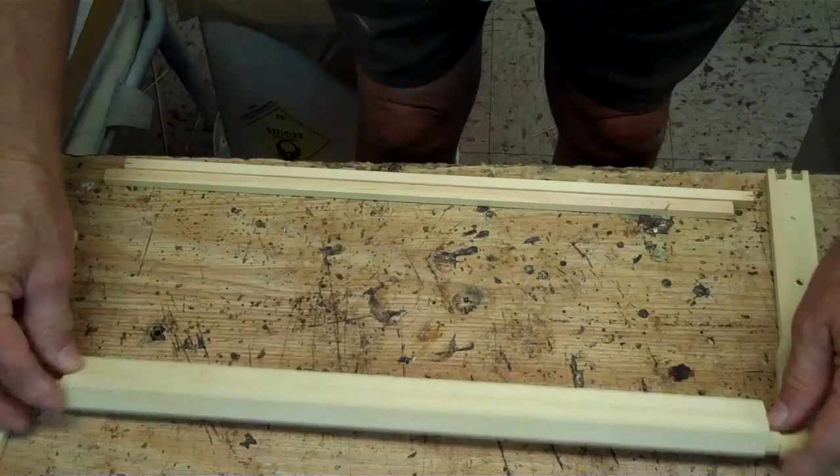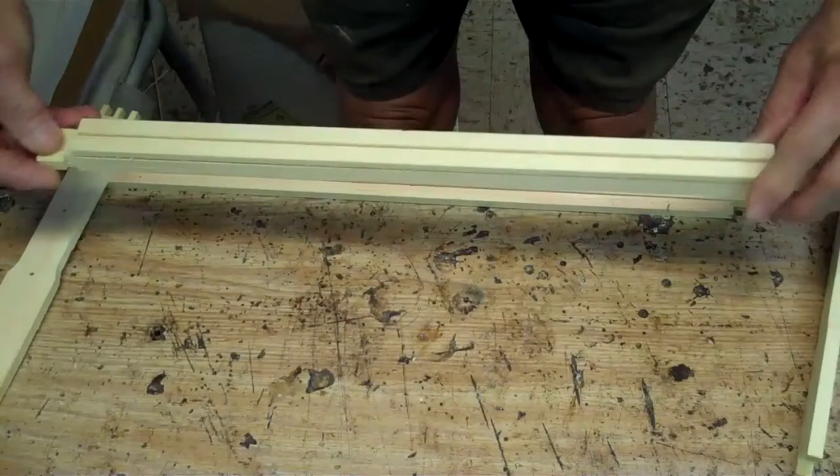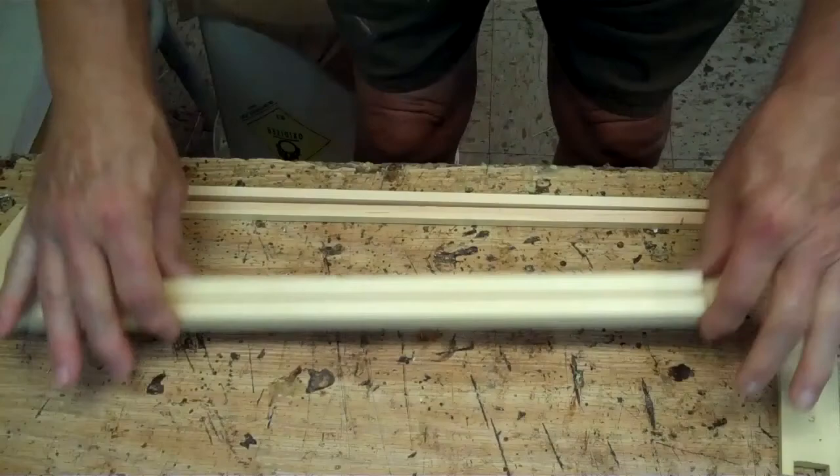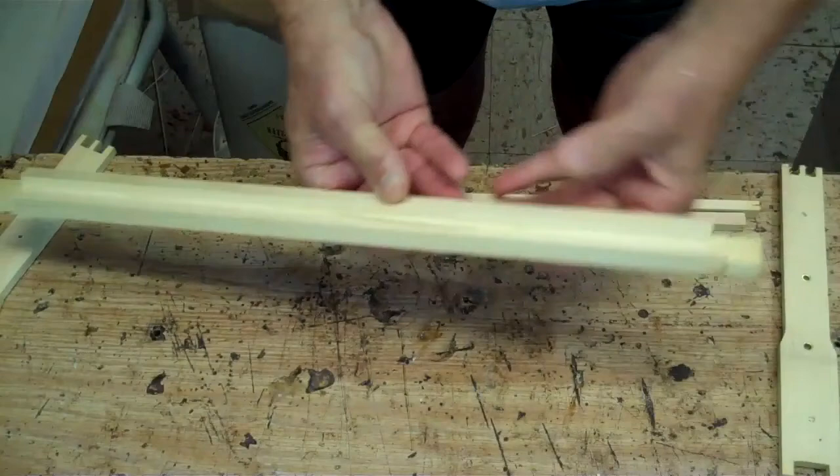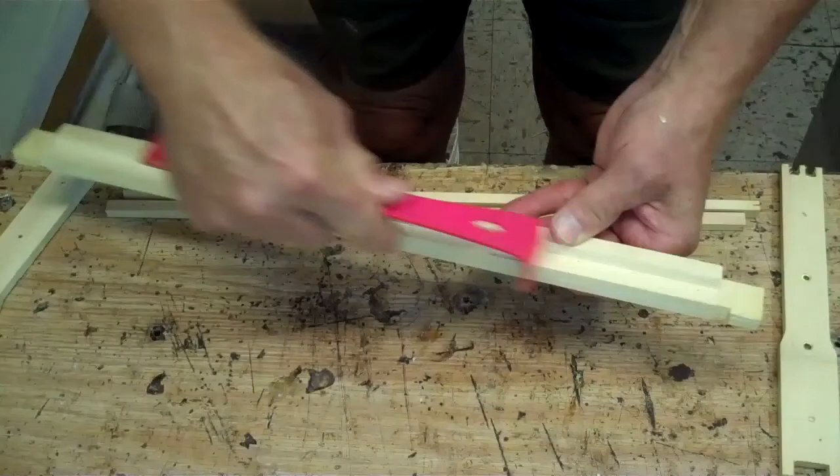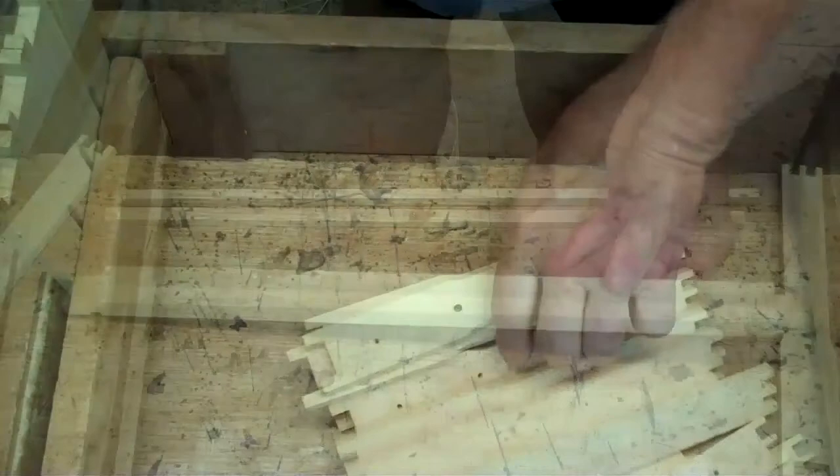This is a brood frame we're going to put together. Here's the two ends, here's the top bar, and these two pieces make up the bottom bar. The first thing you're going to do, you'll see there's a cleat right here. Pop this cleat out, take it out, and then get your hive tool. Be sure you clean this out good because that's where your foundation is going to fit into that groove.